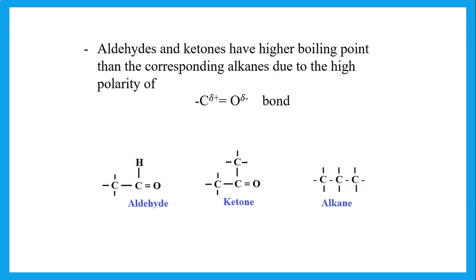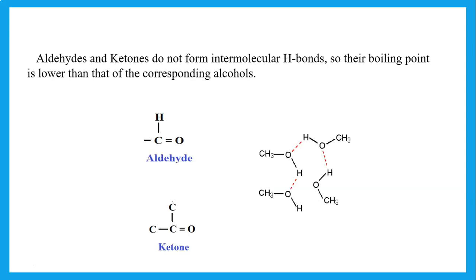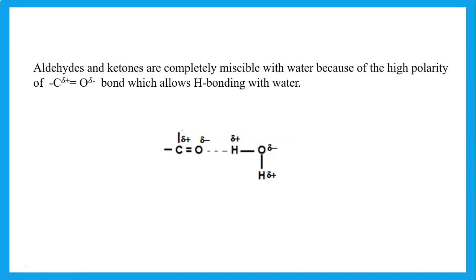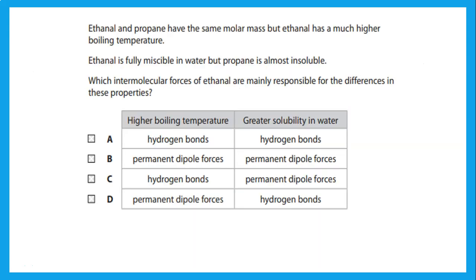Aldehydes and ketones do not form intermolecular hydrogen bonds with themselves, so their boiling point is lower than the corresponding alcohols, which can form hydrogen bonding between molecules. However, aldehydes and ketones can dissolve in water because they have a polar carbonyl C=O bond, which can form hydrogen bonding with water. So they are miscible or soluble in water.